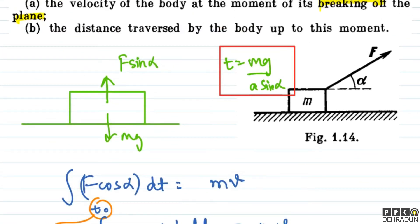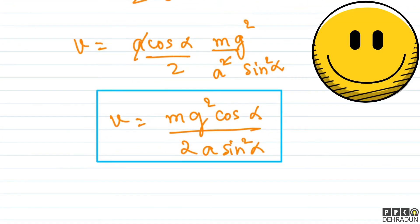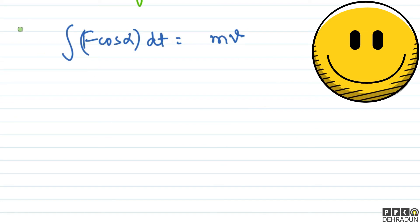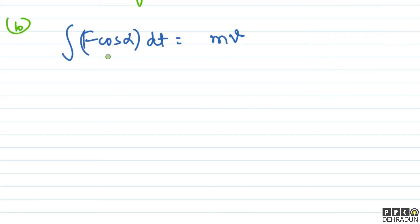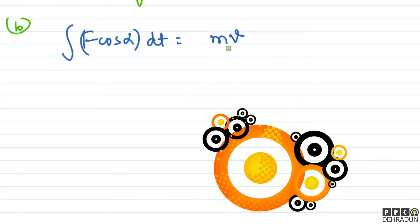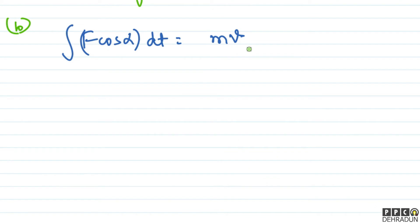Second part में पूछा है: distance traveled by the body up to this moment। तो अब हमारे को distance traveled by the body भी निकालना है। Impulse = change in momentum। किसी भी t time पर body की velocity v को हम निकालेंगे: t = 0 पर velocity 0 थी, और 0 से t (कोई भी intermediate time 0 से t₀ के बीच) तक integration करने पर impulse = change in momentum।